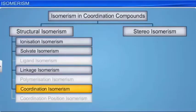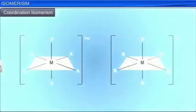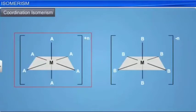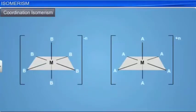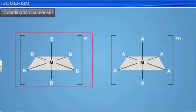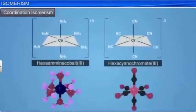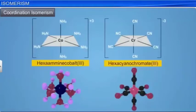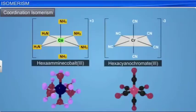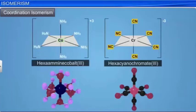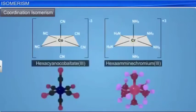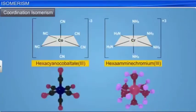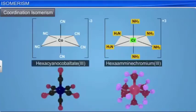Coordination isomerism is another type of structural isomerism. This type of isomerism arises when both the positive and negative ions are complex ions. It may be caused by an interchange of ligands between the anion and the cation. For example, in the complex hexa-amine-cobalt(3) and hexa-cyanochromate(3), the ammonia ligands are bound to the cobalt(3+) ion while the cyanide ligands are bound to the chromium(3+) ions. In its coordination isomer, hexa-amine-chromium(3) hexacyanocobalt(3), the ammonia ligands are bound to the chromium(3) while the cyanide ligands are bound to the cobalt(3+) ions.